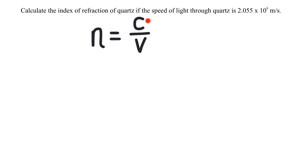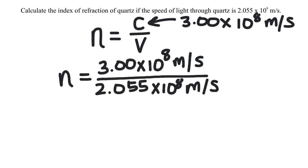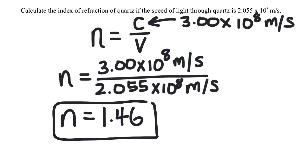Now, we don't need to be told what the speed of light in a vacuum is because it's a constant. The speed of light in the vacuum is 3 times 10 to the 8 meters per second. So we could plug everything into the equation, and we end up with 3 times 10 to the 8 divided by 2.055 times 10 to the 8, and we end up with 1.46. There are no units for an index of refraction because it's just a ratio. It means light travels 1.46 times slower in quartz than in a vacuum.